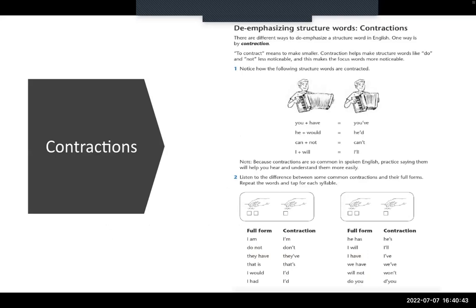We use contractions sometimes in English and that helps us de-emphasize a word, so that we can tell that the word is not important or not giving us information.